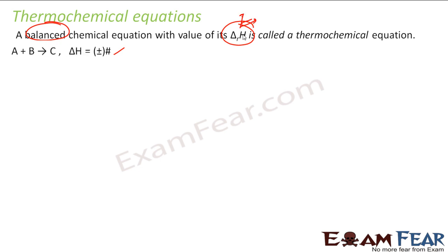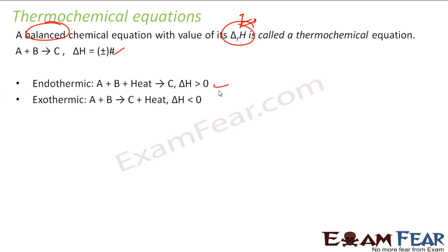The format is: you have a balanced chemical reaction and the enthalpy is given. A thermochemical equation is endothermic if delta H is greater than zero and exothermic if delta H is less than zero. In exothermic reactions, the energy of the system goes down; in endothermic, the energy goes up.